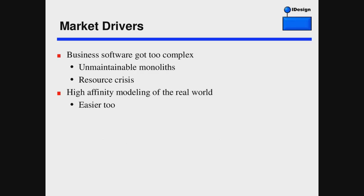Another market driver for the actor model is that our business software just got too complex. Typical business software — ERPs, accounting, any business software — is mostly an unmanageable monolith where we try to add more duct tape and make it bigger. But there's a natural cap: no single system can ever catch up with the complexity of the business. Besides having an unmanageable monolith, we hit a resource crisis — we're simply unable to hire enough competent, qualified developers and architects to maintain it. We've reached the end of the road. And even if it were maintainable, there's no good affinity with the real world. The actor model can give us high affinity with the real world, and it's also a lot easier to do than sequential programming on a CPU.